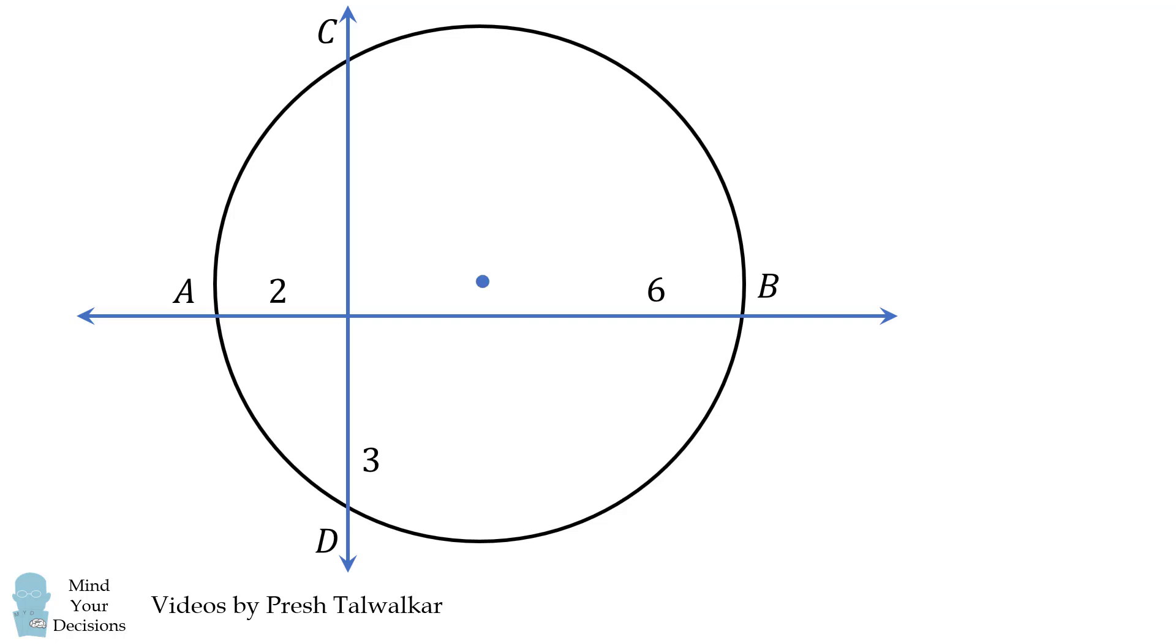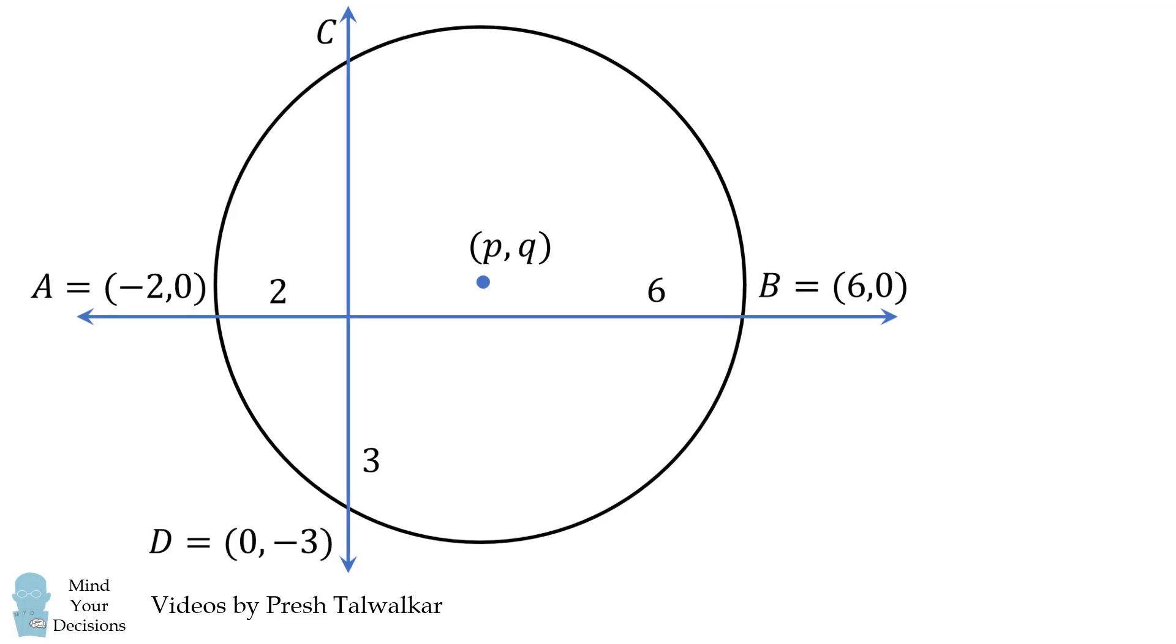We'll label the center of the circle as the point (p, q). Let's now label the points. A will be equal to (-2, 0), B will be equal to (6, 0), and D will be equal to (0, -3).